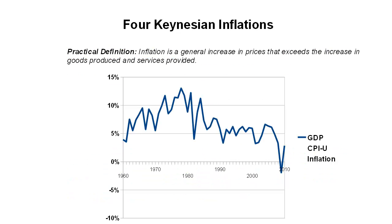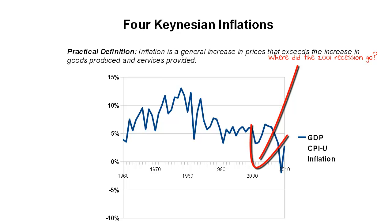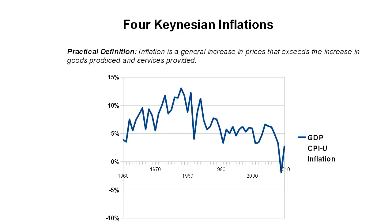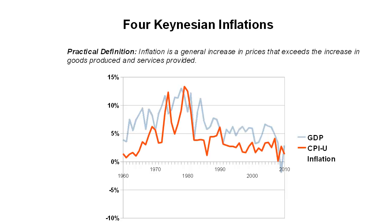So let's look at GDP. We'll stick with the practical definition: inflation being a general increase in prices that exceeds the increase in goods and services. Here we have the GDP from 1960 to 2010 — 50 years of the growth rate, the rate of increase in goods and services — with CPI-U being the index of the price changes. We showed last week that it's not entirely accurate, but we'll stick with this measure to keep it simple. And what's very clear is that the increase in prices does not exceed the increase in goods produced and services provided. Therefore, both those definitions have to be wrong — either there has been very little inflation and we've been in a massive deflationary period over the last 50 years, or the definition is incorrect.